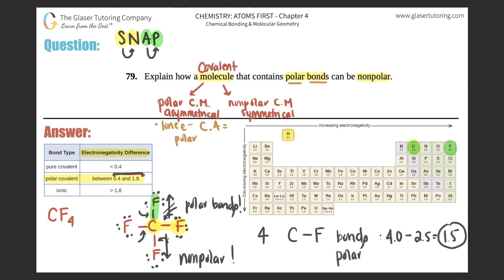So that's how a nonpolar covalent molecule could have polar bonds, because they could have the polar bonds, but then they will just all cancel out, and that's why it would be nonpolar. It would be symmetrical, no dipole.